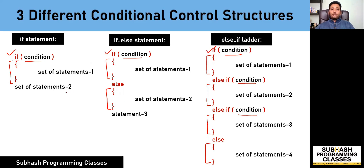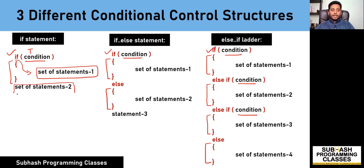Now let us learn how these conditional control structures work, starting with the simplest one — the if statement. If this condition evaluates to be true, then the program control will enter into the if block, execute the set of statements within that block, and then come out and execute the rest of the statements. Whereas if this condition evaluates to be false, the program control will skip this block, ignore it, and then execute the rest of the statements following this block.